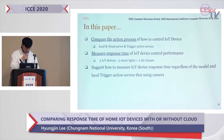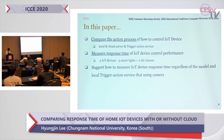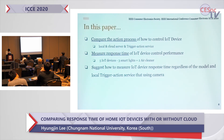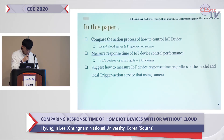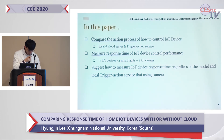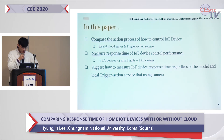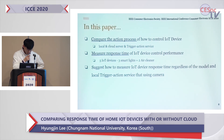In this paper, we compare two action processes of how to control an IoT device. The control method has three categories: local control, cloud server, and trigger-action service. We measure the response time of IoT device control performance. Five commercially available products were used: Philips Hue, Xiaomi, Elis, TP-Link, CASA, Samsung SmartThings, and LG SmartThing Hue.